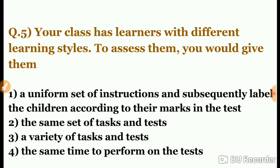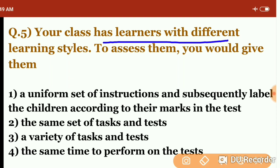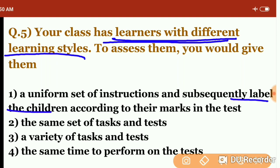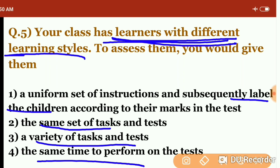Question five: your class has learners with different learning styles — to assess them you would give them: a uniform set of instructions and then label children by marks; the same set of tasks and tests; a variety of tasks and tests; or the same time to perform on the test. Since there are individual differences among learners, variety is needed to cater to those differences. The answer is the third option — a variety of tasks and tests.